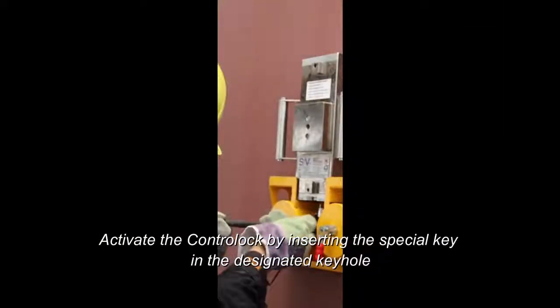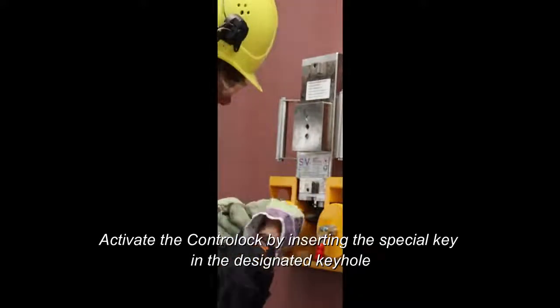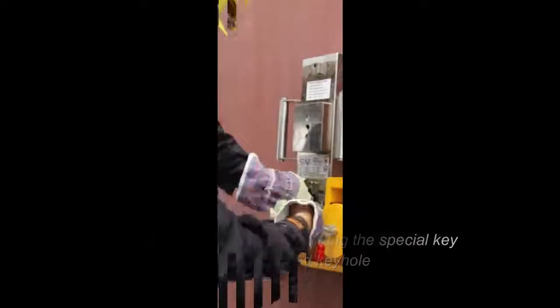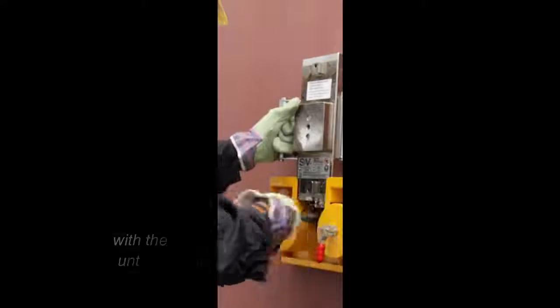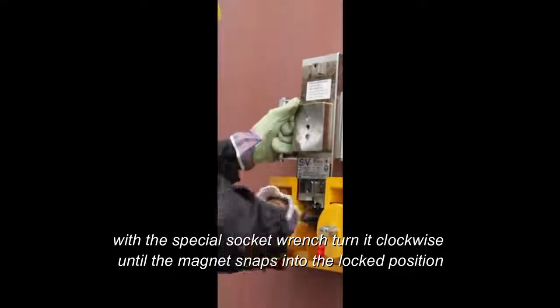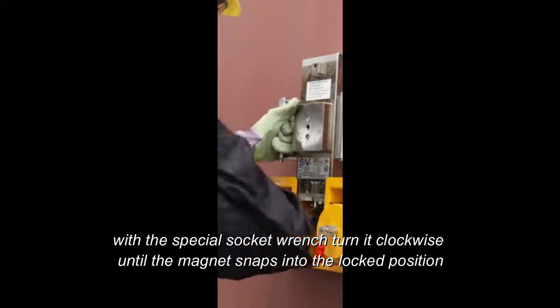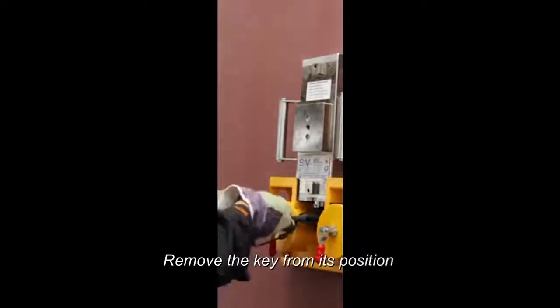Activate the control lock by inserting the special key in the designated keyhole. With the special socket wrench, turn it clockwise until the magnet snaps into the locked position. Remove the key from its position.